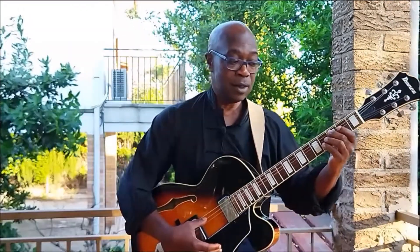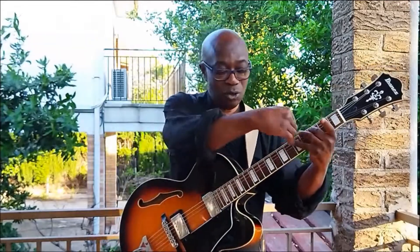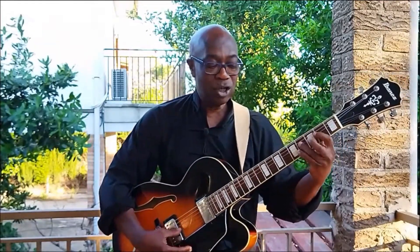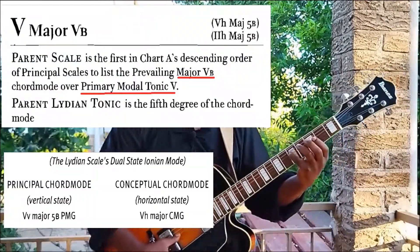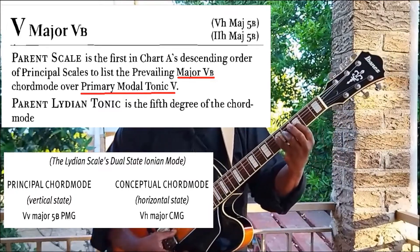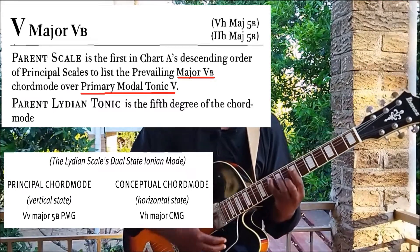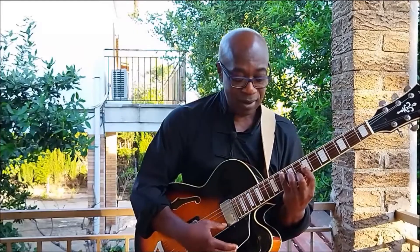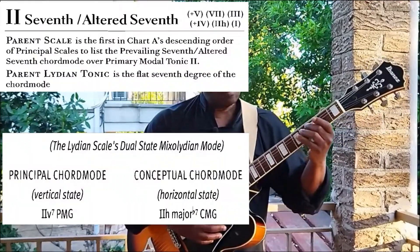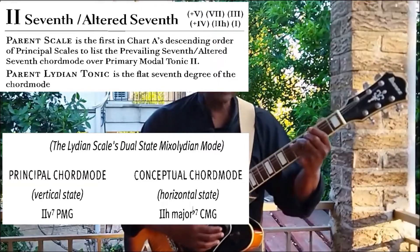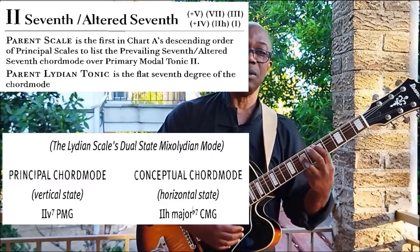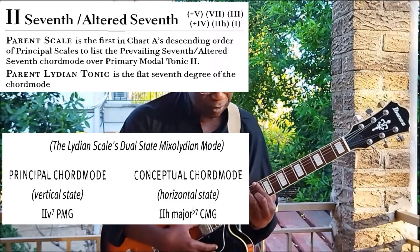Starting from the Lydian scale and going to the left, we count: one, two, three, sharp four, five — so the first conceptual tonic is G. The next one is found on the second degree: one, two — C, D — so D is the second one, which is a major alt, and we place it here. So we have G and D.